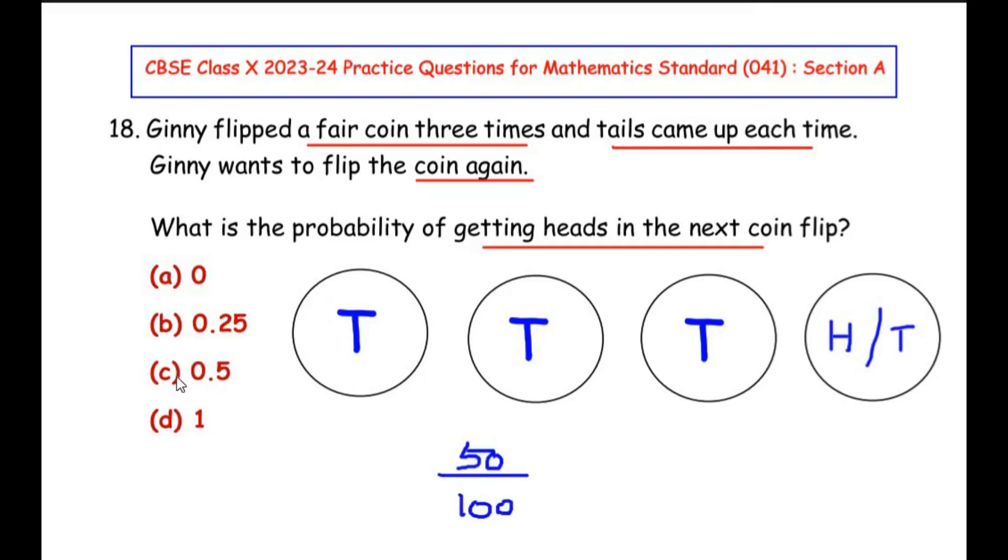Since the answer is given in terms of decimals, this is nothing but 0.5. So here the option is C. Genie has a probability of getting heads in the next flip and the chances are 50%, that is 0.5.